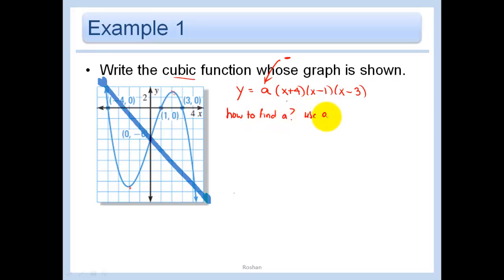Just use another point that you have. Any other point that they give you would work. In this case, they happen to give you the y-intercept (0, -6). But it could be any other point—it doesn't matter. And so I just use that point, (0, -6), in this equation here.